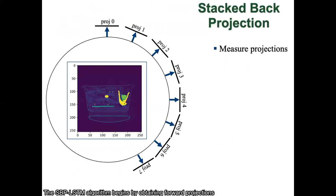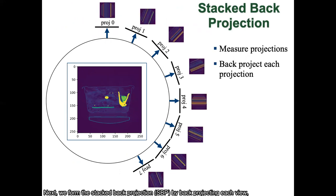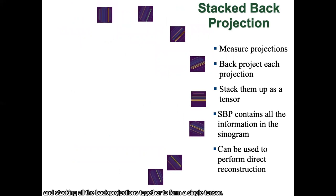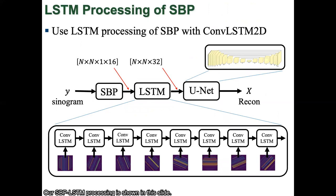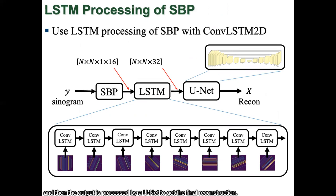The SDP-LSTM algorithm begins by obtaining forward projections using some type of CT imaging system. Next, we form the stacked back-projections by back-projecting each view and stacking all the back-projections together to form a single tensor. This tensor contains all the information from the original sinogram data and can therefore be used to perform direct reconstruction. The SDP tensor goes through a 2D convolutional LSTM module, and then the output is processed by a unit to get the final reconstruction.